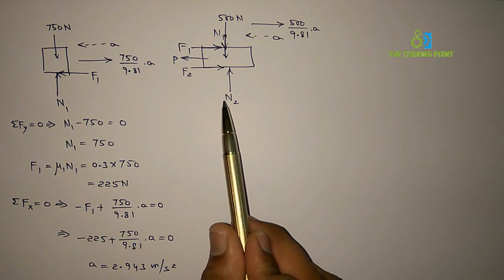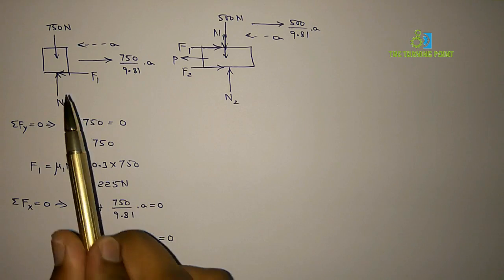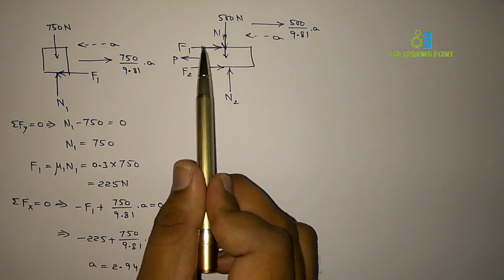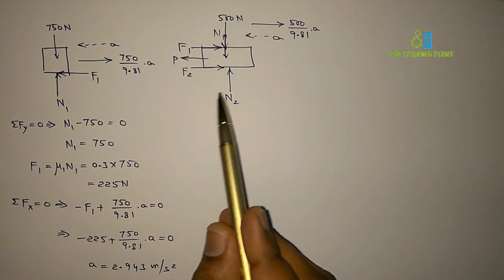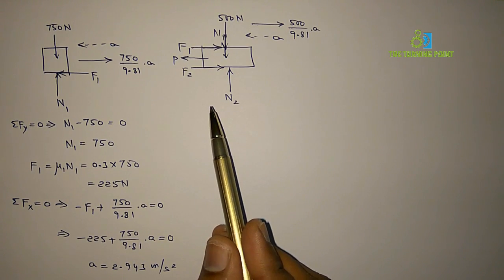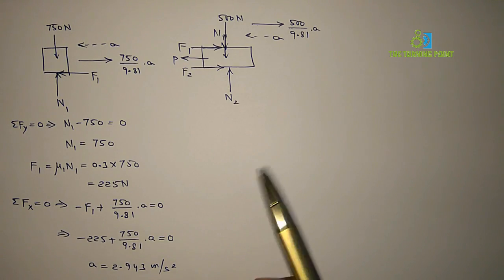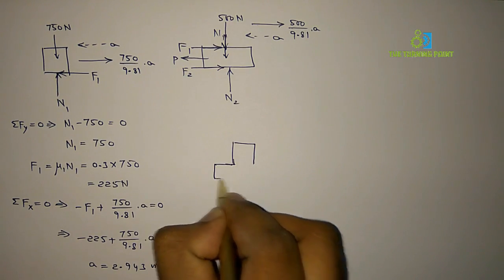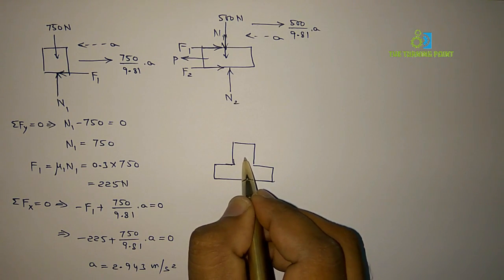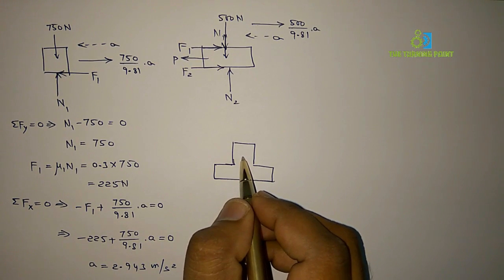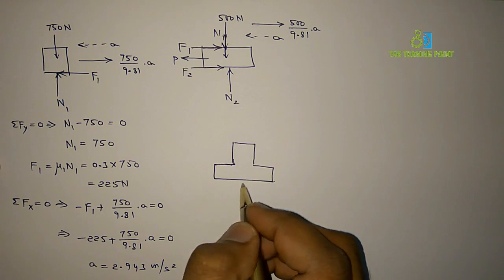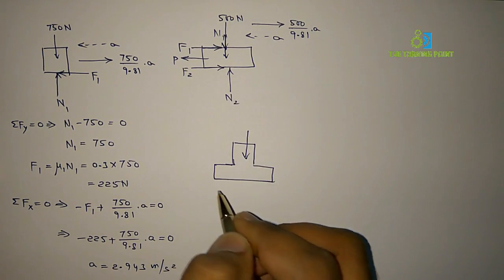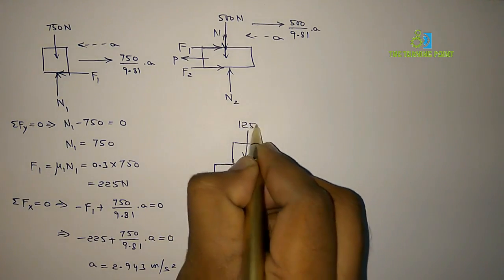Now, instead of using the free body diagram of the cart separately, if we consider the 750N crate and 500N cart as a single unit, we can eliminate the internal frictional force between them. For simplicity, I am drawing the free body diagram of both the 750N and 500N blocks combined as a single unit. The weight acts vertically downwards: 750 + 500 = 1250N.